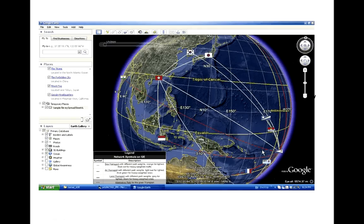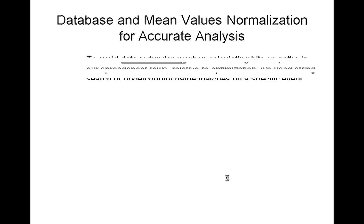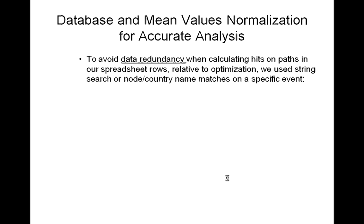We have already run an example in our demo on one of the source nodes to destination. In particular, Australia was our source node and its destination was American Samoa. To avoid data redundancy when calculating hits on paths in our spreadsheet rows relative to optimization, we used string search or node country name matches on a specific event.